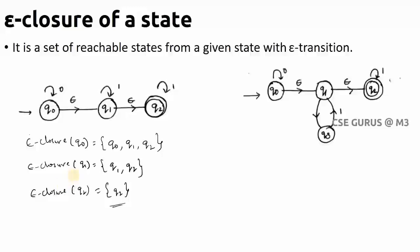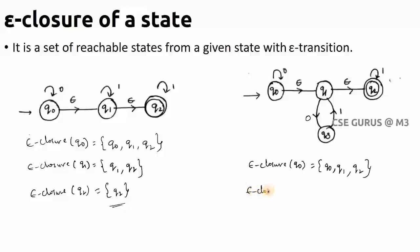Let us consider one more example. For ε-closure(Q0): first add Q0. From Q0, I can reach Q1 with epsilon. From Q1 → Q2 with epsilon, so Q2 is also reachable from Q0. Can I reach Q3? No — there is no epsilon transition from Q1 to Q3 (Q1 → Q3 uses input 0, not epsilon). So ε-closure(Q0) = {Q0, Q1, Q2}.